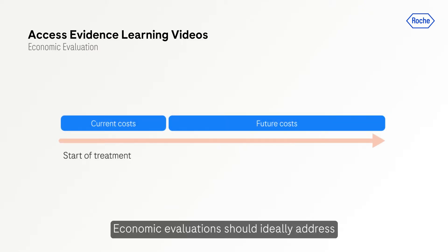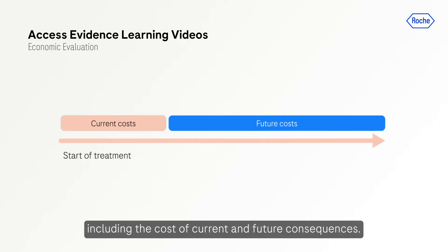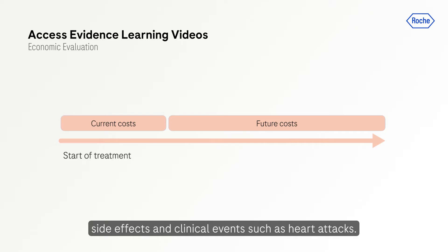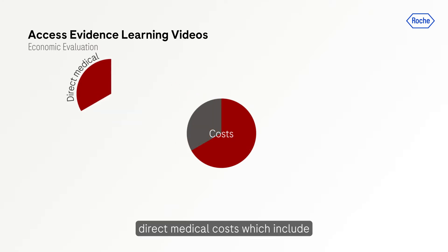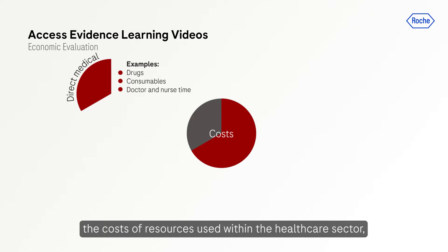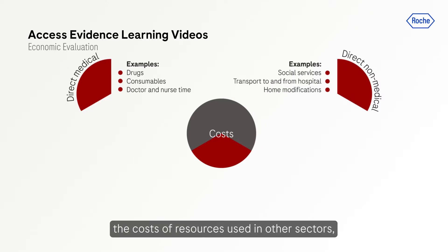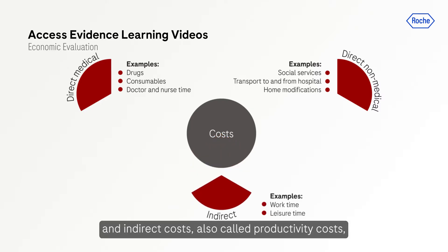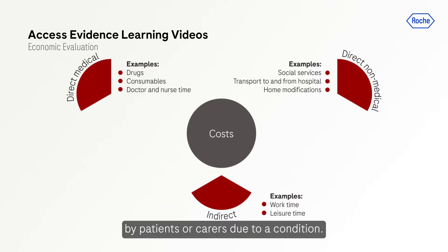Economic evaluations should ideally address all costs incurred in providing a health care intervention, including the cost of current and future consequences — for example, side effects and clinical events such as heart attacks. Costs can be split into three categories: direct medical costs, which include the costs of resources used within the health care sector; direct non-medical costs, which include the costs of resources used in other sectors; and indirect costs, also called productivity costs, which include the cost of time lost by patients or carers due to a condition.